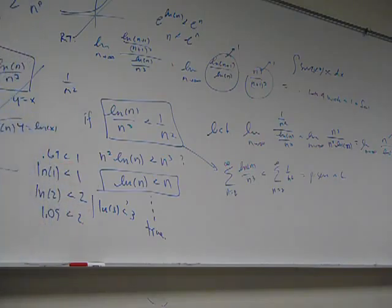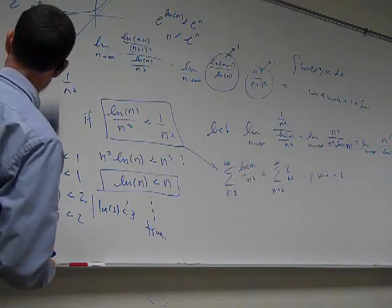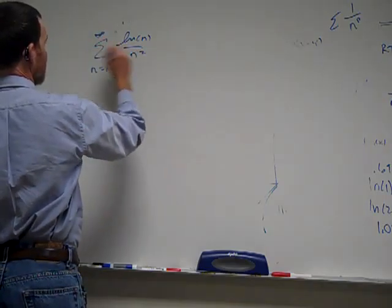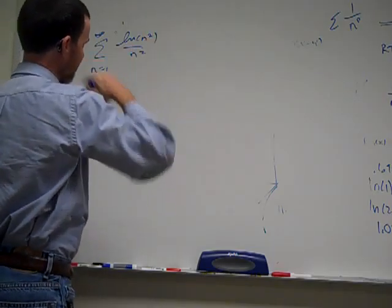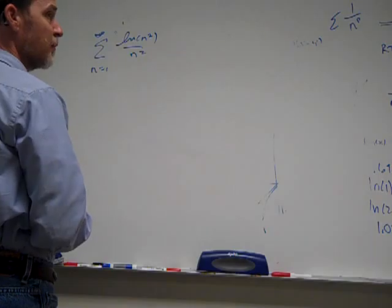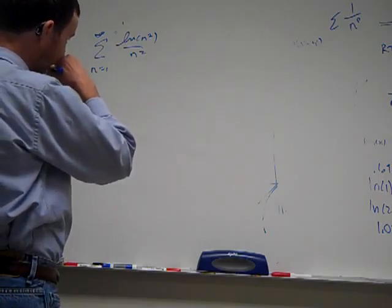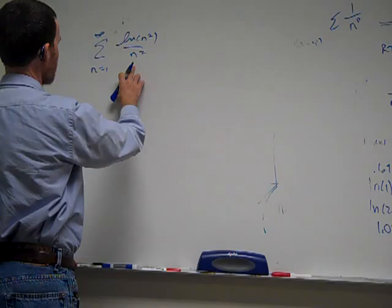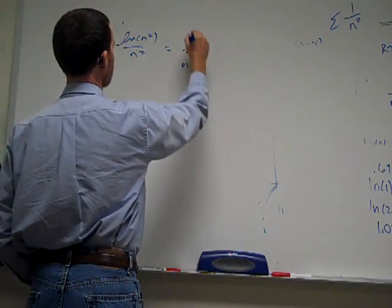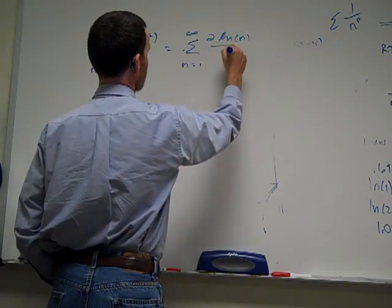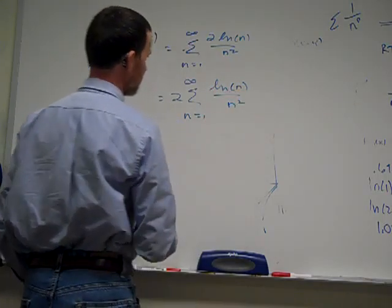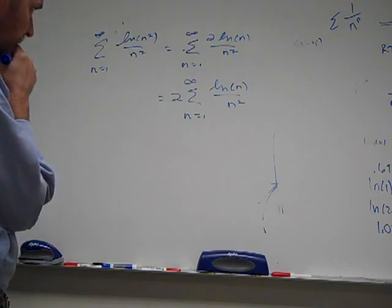The next one is natural log of n squared over n squared. Would that make any difference? We'll do them both being the same power. Natural log of n squared as well. Hmm. Well, the top's going to get bigger faster. That's definitely a tougher one. That's definitely, well, the bottom, I suspect, is still growing faster than top. Ah, wait a minute.